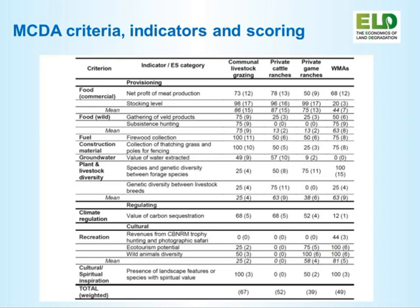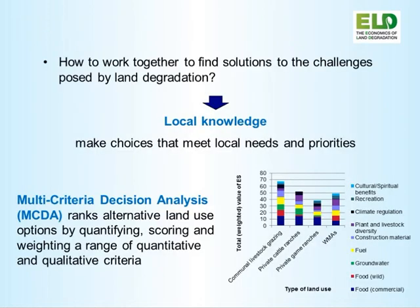The scores in brackets are the weighted scores. As mentioned, some criteria play a higher role than others according to the stakeholders' assessment in the workshop. The numbers in brackets are the weighted numbers that reflect the relative importance of each criterion to society. Then you've got the final total at the bottom — 67, 52, etc. — represented in the diagram. For example, the tallest line is communal livestock grazing, which achieved the highest MCDA score, meaning it performed better than private game ranches, which achieved the lowest score.